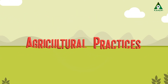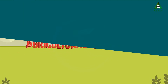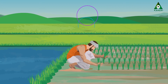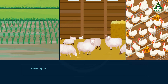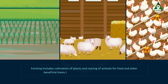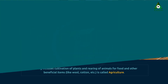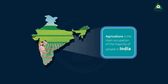Agricultural Practices. The science of farming is called agriculture. Farming includes cultivation of plants, rearing of animals, food and other beneficial items like wool, cotton, etc. Agriculture is the main occupation of majority people in India.